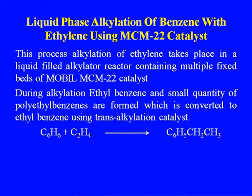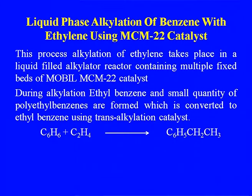Another process is the liquid phase alkylation of benzene with ethylene using MCM-22 catalyst. Alkylation takes place in a liquid-filled alkylator reactor containing multiple fixed beds of MCM-22 catalyst. During alkylation, small quantities of polyethyl benzene are also formed, which are converted to ethyl benzene using a transalkylation catalyst.